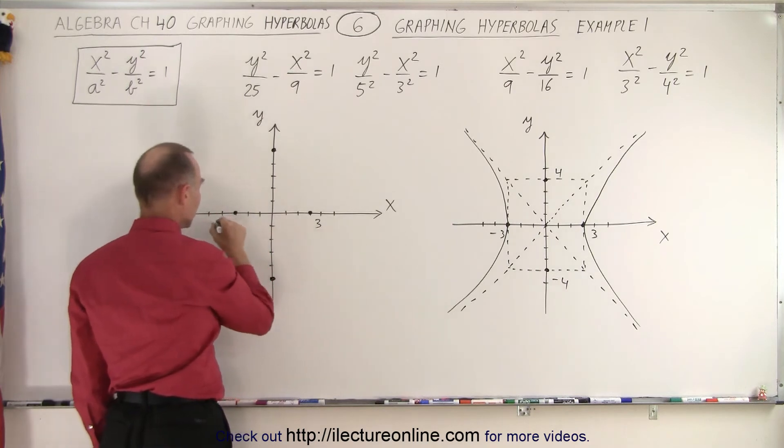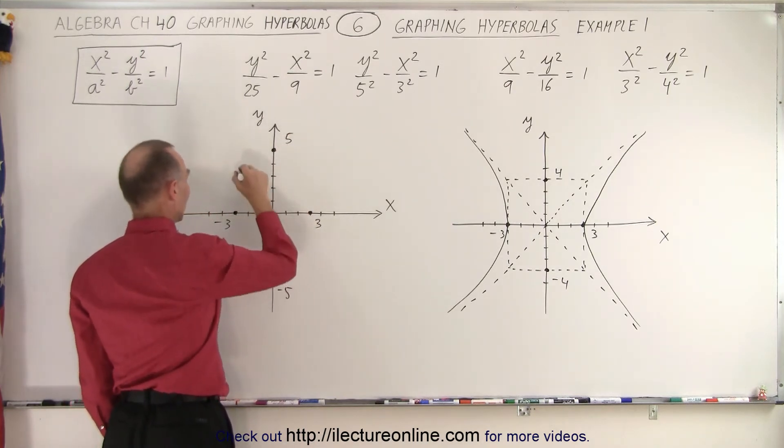Like this. So we have 3, negative 3, 5, and negative 5. Then we draw the box.